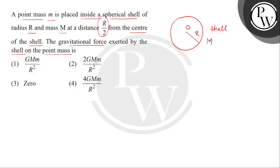Is mein hum logo ne center se R by 2 distance per a point mass place kiya hua hai. Its mass value is small m. So humay find karna hai what is the gravitational force on this point mass by this shell.